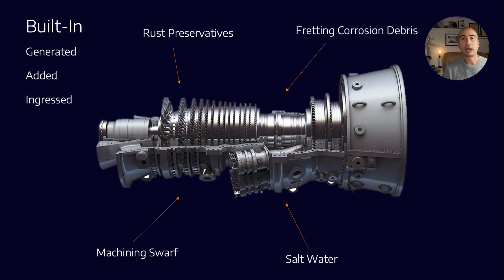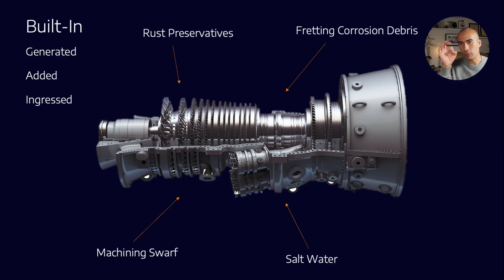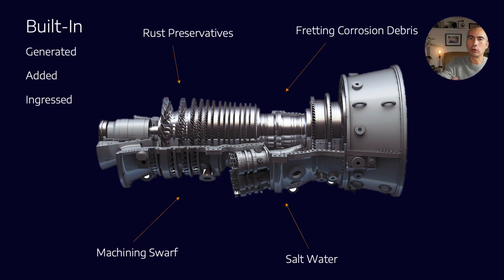To protect equipment from salt water contamination, there are usually rust preservatives inside. On top of that, we might have fretting corrosion debris. Fretting corrosion occurs when low-level vibrations over a reasonable period of time cause a type of corrosion, most commonly associated with ball bearings. A ball bearing sitting inside a race, vibrating slightly over a long period, will form a divot underneath it with a buildup of oxides — that is the fretting corrosion debris. To eliminate all these built-in contaminants, what we're really talking about is doing an adequate flush before putting something into service.